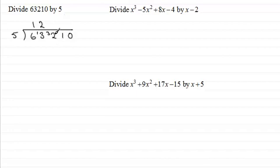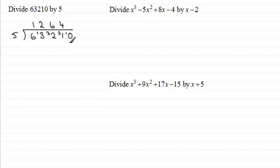5 twos are 10 and that leaves us with 3 left over. Put it against the 2 here to get 32. What do we multiply 5 by to get as close as we can to 32? It's going to be 6 — 6 fives are 30, that leaves us with 2 left over. What do we multiply 5 by to get as close as we can to 21? 4, because 5 fours are 20. That leaves 1 left over. What do we multiply 5 by to get as close as we can to 10? Well it's exactly 2.